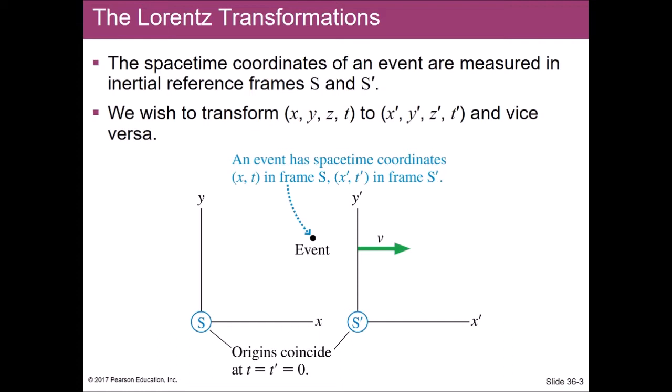The space-time interval helps with intervals, but we're often interested in absolute positions and times. In Galilean relativity we had Galilean transformations to find positions and velocities in different reference frames. Similarly, we should be able to do this with Lorentz transformations, noting that time is not absolute — it's relative to the reference frame. So we include a time coordinate, and incorporate the Lorentz factor. The idea is that an event can be described with space-time coordinates, and we want to translate between two coordinate systems knowing the relative velocity of the frames.